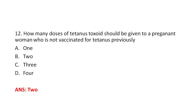Next question: How many doses of tetanus toxoid should be given to a pregnant woman who has not been vaccinated for tetanus previously? Option A, 1; Option B, 2; Option C, 3; Option D, 4. The right answer is Option B, 2. Two doses of tetanus toxoid should be given at an interval of 4 weeks. If a woman was already vaccinated with 2 TT doses in a pregnancy within the last 3 years, only a single booster dose is given, before 36 weeks if possible.